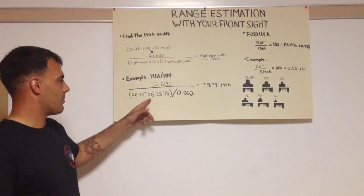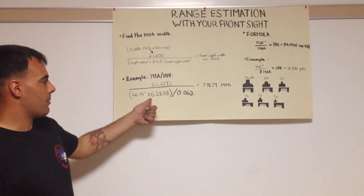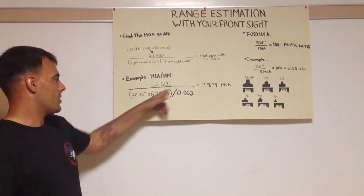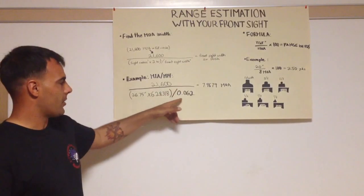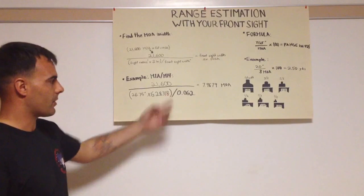You'll multiply that by 2π, which turns out to be 6.28318. If you know anything about mils, this number might look familiar. And you're going to take this in parentheses divided by the width of my front sight post in inches, which is 0.062 inches for a national match front sight post.